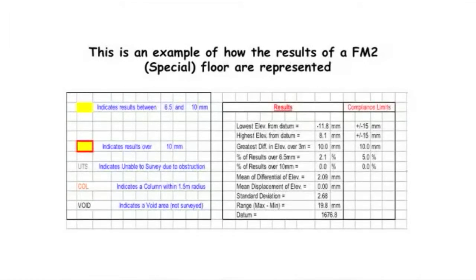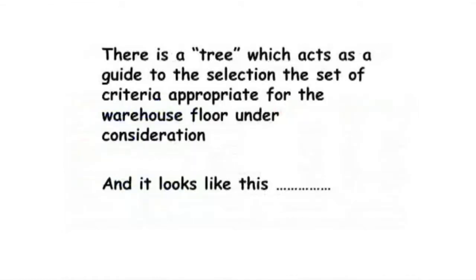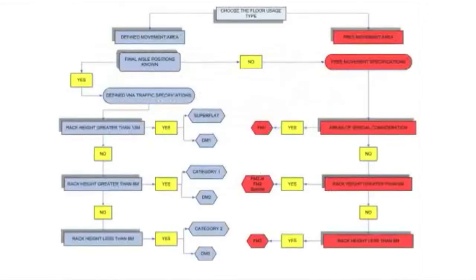So we got to 1994 when TR34 came out, giving us specifications that can cater for any warehouse or industrial floor — primarily warehouses, because of their importance to the safe and efficient operation of equipment. The TR34 fourth edition guys came up with a decision tree that is actually very simple to understand.